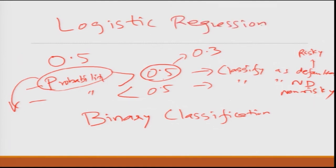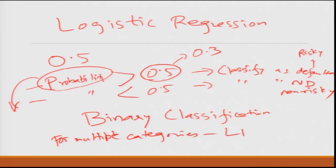There are logistic models for multiple classes, but they are not very popularly used for multiple categories. Linear discriminant analysis or Naive Bayes are more popularly used, or another approach is to use logistic regression successively — classify into two first, and then within those two do a further classification. You have different approaches depending upon the kind of data you have.